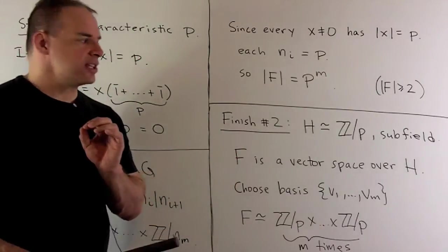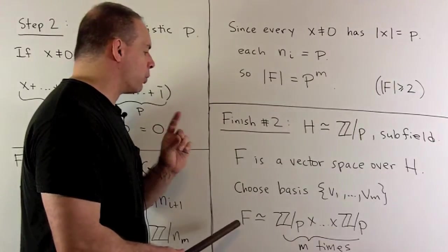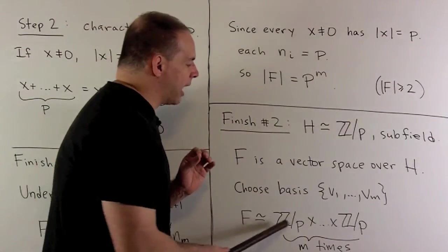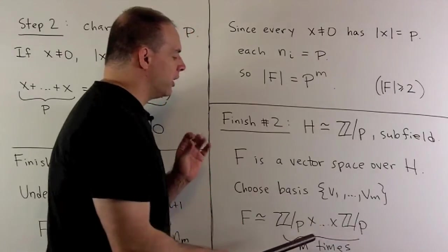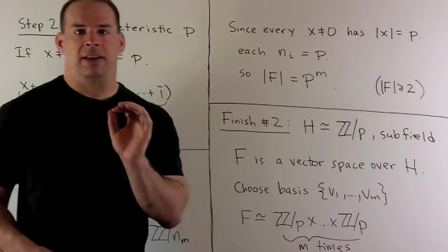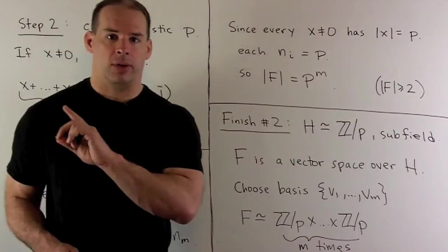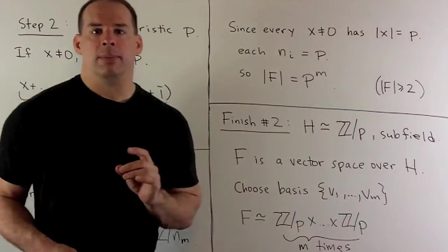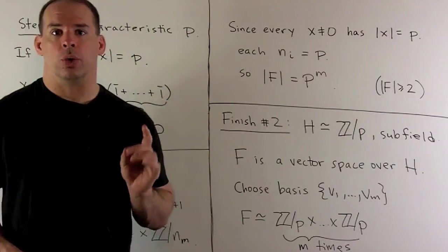So, once I choose a basis, we can set up a vector space isomorphism between F and a product of Z mod p's. So, if I have m factors here, then the order of F is going to be p to the m, which agrees with the other method. And if you note, our final answer here looks a lot like what we would get from fundamental theorem of finite abelian groups.